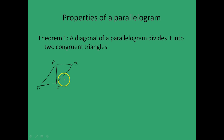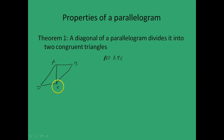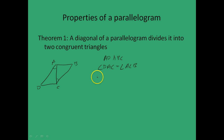Let's see how we can do that. We know that AD is parallel to BC. Considering parallel lines AD and BC, with AC as the transversal, we know that angle DAC is equal to angle ACD — these are alternate angles. And considering parallel lines DC and AB, with AC as the transversal, we have angle DCA is equal to angle CAB — again alternate angles.